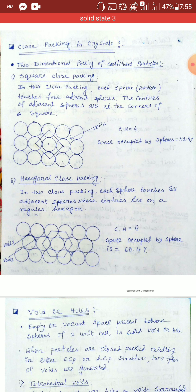In the case of a primitive or simple unit cell, the packing fraction is 52%. In the case of a face-centered unit cell, the packing fraction is 74%. In the case of a body-centered unit cell, the packing fraction is 68%.